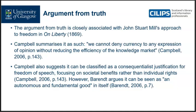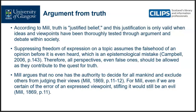The argument from truth is closely associated with John Stuart Mill's approach in On Liberty. Campbell summarizes it as: we cannot deny currency to any expression of opinion without reducing the efficiency of the knowledge market. Campbell also suggests it can be classified as a consequentialist justification for freedom of speech, focusing on societal benefits rather than individual rights. However, Barrett argues it can also be seen as an autonomous and fundamental good in itself. According to Mill, truth is justified belief, and this justification is only valid when ideas and viewpoints have been thoroughly tested through argument and debate. Suppressing freedom of expression on a topic assumes the falsehood of an opinion before it is even heard, which is an epistemological mistake.